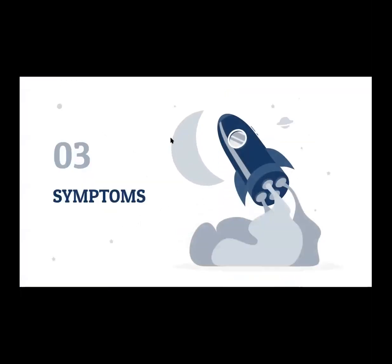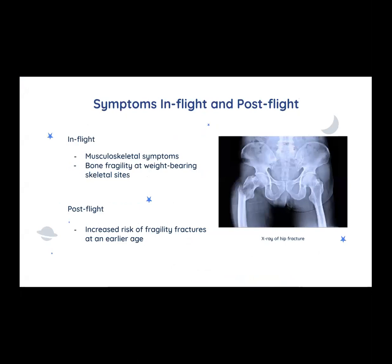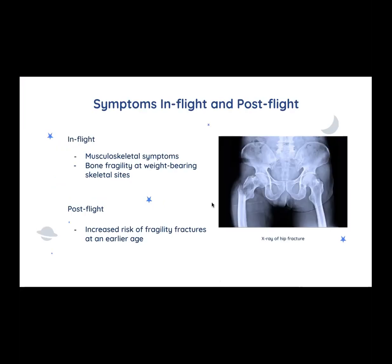What are some of the known symptoms? In-flight musculoskeletal symptoms include pain, stiffness, or fatigue at muscles, bones, ligaments, tendons, and nerves, as well as bone fragility where weight is concentrated, such as the hip. Post-flight, persistent structural deficits after spaceflight could be worsened by changes induced by microgravity, and this predisposes long-duration astronauts to fractures at an earlier age.